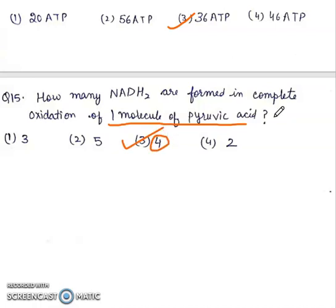We will have Krebs cycle and link reaction. We will have NADH2 count on the link reaction. Link reaction means one NADH2. Krebs cycle means 3 NADH2.